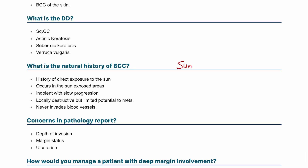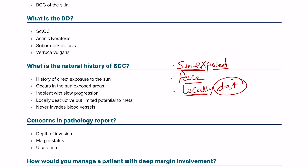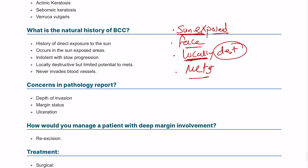Natural history of basal cell carcinoma: it happens in sun-exposed areas, typically the face, and direct exposure to the sun is the main factor. It is a locally destructive tumor — destructive to the local area but without a high potential for metastasizing elsewhere. It is very indolent with slow progression.